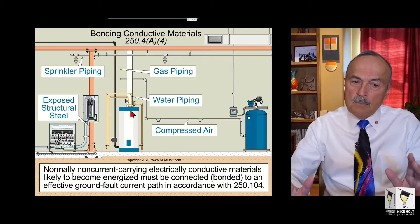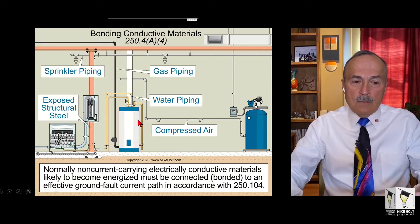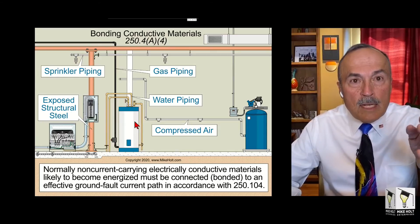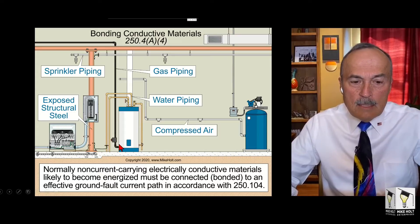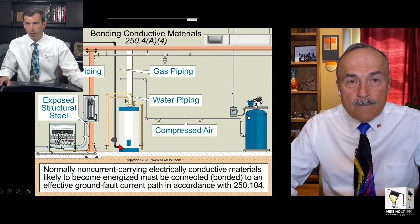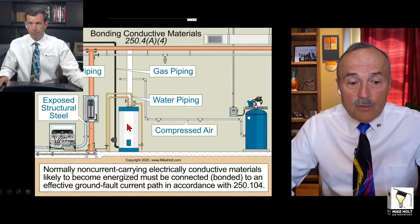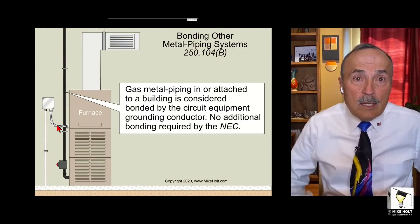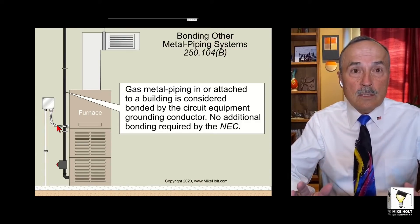If this is a gas water heater, there's no electrical circuit going to it, so this gas pipe is not required to be bonded. If it were an electric water heater, it would be different — but it would automatically be bonded because you have to bring an equipment grounding conductor to the equipment in the first place. Either way, there's nothing additional to do.